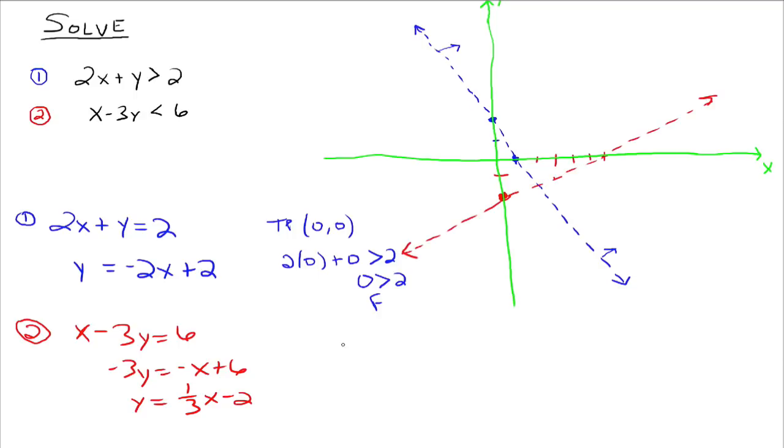So now we'll take a test point for the second one here, and again, we can use 0, 0 because it's clearly off the line. So plug it into the second inequality. We have 0 minus 3 times 0 is less than 6. So we have 0 is less than 6. That is true. So we want to shade in this direction.